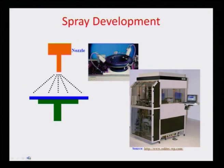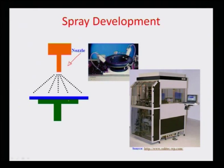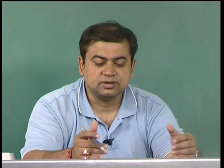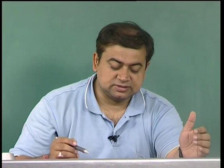In high-throughput processes, a nozzle does spray development of the resist, and there are large transfer lines where substrate cleaning, resist coating, heating, pre-baking, exposure, and development are all automated. This enables high-throughput production of wafers.